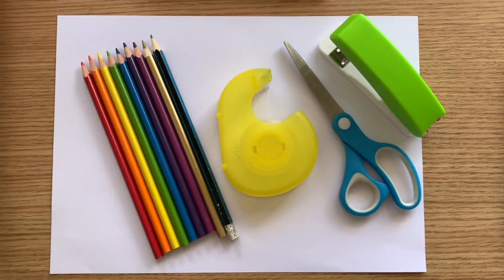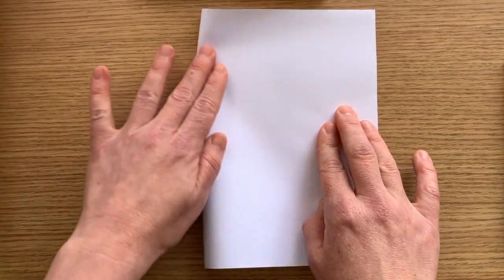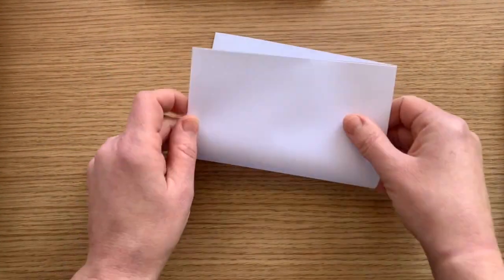Now put everything but the paper to one side. Fold your paper about three times until it's a small rectangle.